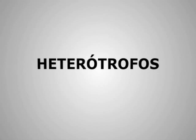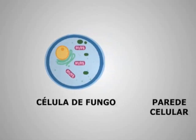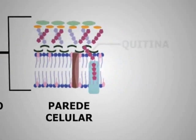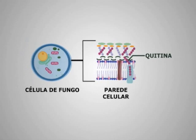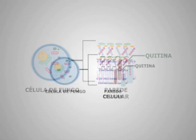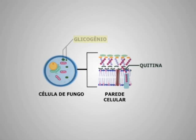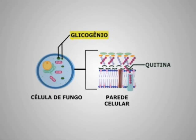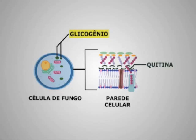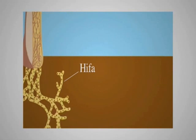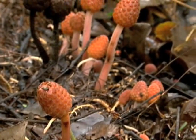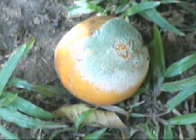Todos os fungos são heterótrofos. E a maior parte das espécies apresenta duas características comuns aos animais. A primeira é a presença de um polissacarídeo chamado quitina, que também compõe o exoesqueleto dos artrópodes, na sua parede celular. A outra característica é a capacidade desses organismos de armazenar glicogênio como substância de reserva. Os fungos filamentosos são constituídos de hifas, filamentos delgados que em conjunto formam um micélio. São exemplos de fungos filamentosos os cogumelos, as orelhas de pau e os bolores dos alimentos e dos objetos.